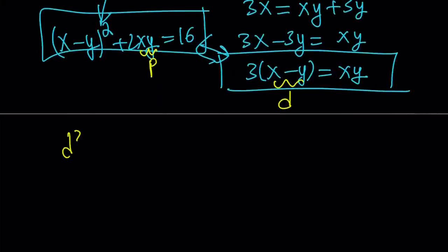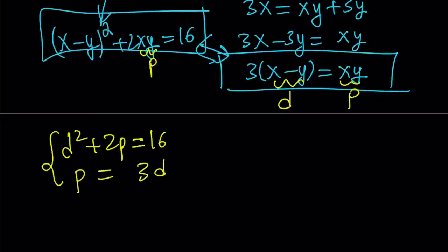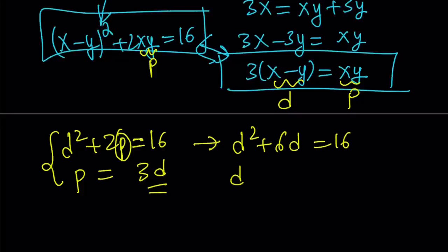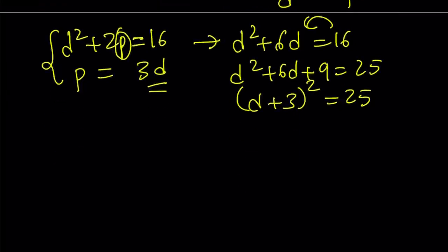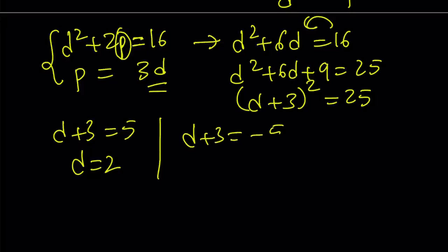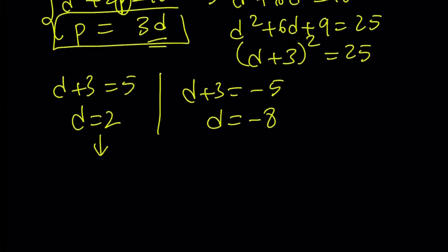And let's call this p for product. And we get the following: d squared plus 2p equals 16. And then we also get p equals 3d. So that's a nice system — quadratic, but we can directly use substitution here. Let's go ahead and replace the p in the first equation with 3d. So d squared plus 2 times 3d, which is 6d, equals 16. And from here, if we add 9 to both sides, we get d plus 3 quantity squared. Or you can use the quadratic formula, or put everything on the same side and factor it. So from here, d plus 3 is 5, which means d could be 2; or d plus 3 is negative 5, which means d equals negative 8. And of course we can use the identity p equals 3d and just multiply d by 3 to get the p value. p is 6 here, and p is negative 24 for the other case.